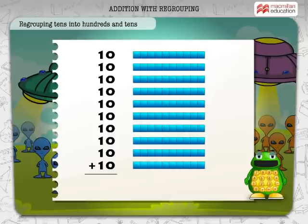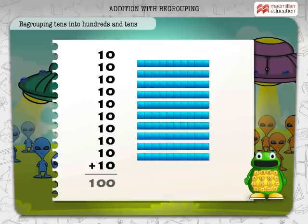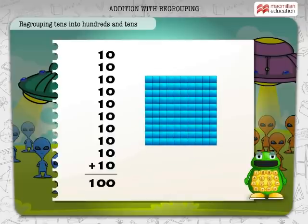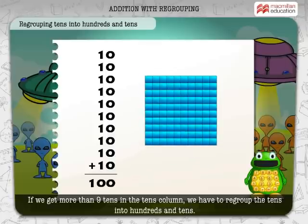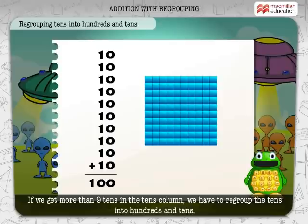10 tens make 100. If we get more than 9 tens in the tens column, we have to regroup the tens into hundreds and tens.